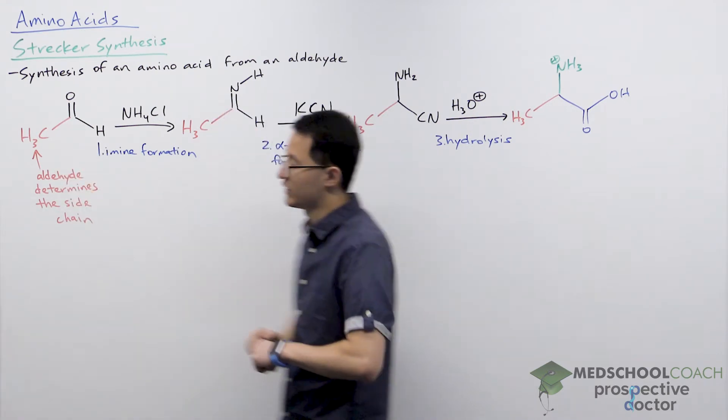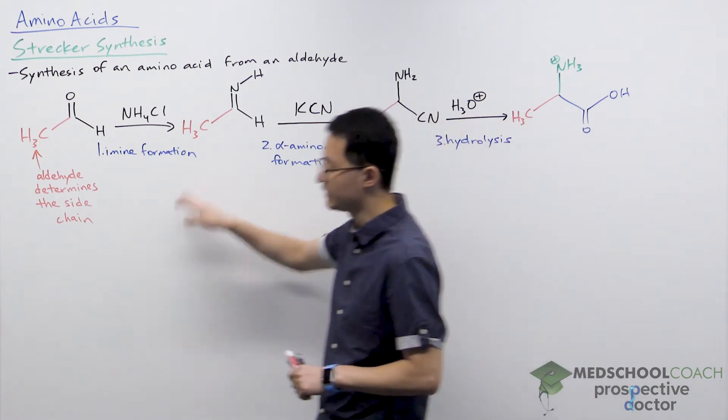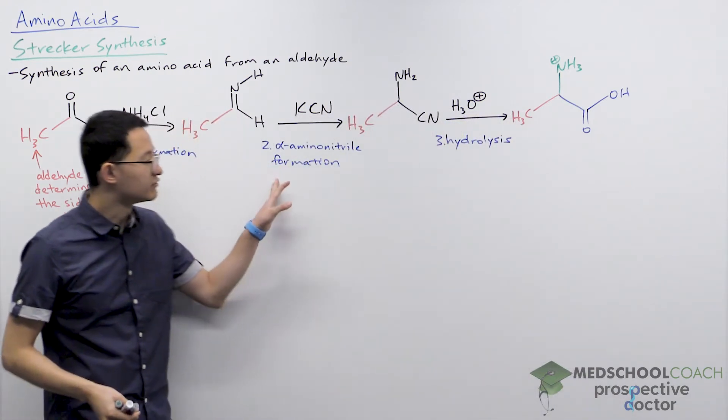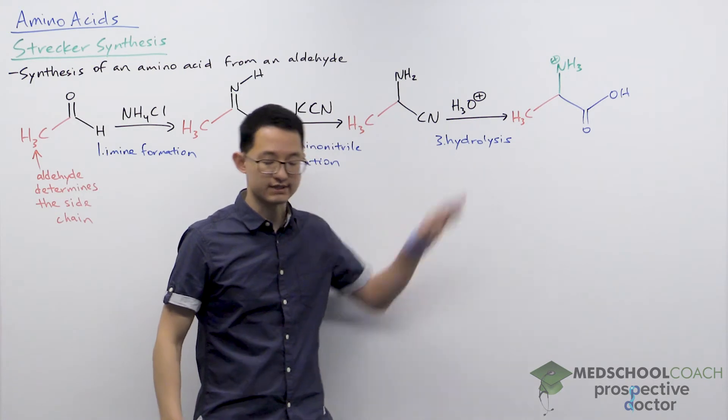Now for Strecker synthesis there are three steps: amine formation, alpha-aminonitrile formation, and hydrolysis.